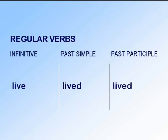The past participle is similar to the infinitive because it has no subject and no verb tense. The past participle is used to make the present perfect, and the present perfect connects the past with the present. I have lived in Valencia for 15 years. The past participle is also used to make the passive. The prime minister was eaten by a shark.